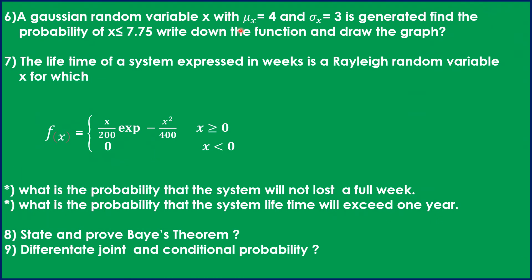The sixth question: a Gaussian random variable X with μ_X = 4 and σ_X = 3 is generated. Find the probability of X less than or equal to 7.5. Write down the function and draw the graph.